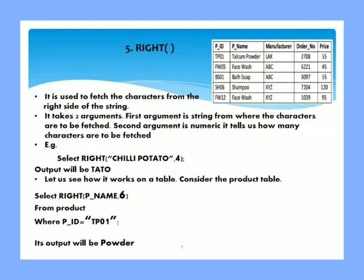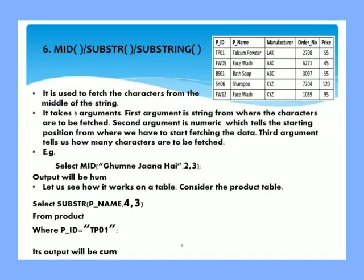Now let us consider the next example: select right PNAME comma 6 from product where PID equals TP01. For TP01, the PNAME is Talcum Powder. How many characters we have to fetch? Six. So start from the right side. We have POWDER. So the output will be POWDER.